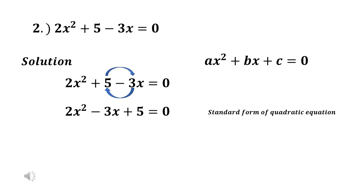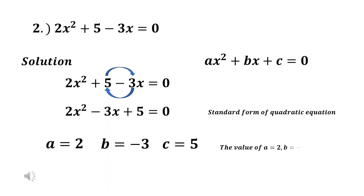Then we will now identify the value of a, b, and c. The value of a is equal to 2, the value of b is equal to negative 3, and the value of c is equal to 5. That is how you transform the given equation and also identify the value of a, b, and c.